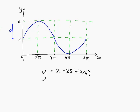So my graph actually is 2 plus 2 sine x over 4 and I think that was all we had to do, find a possible trig function that matches the graph, and we have.